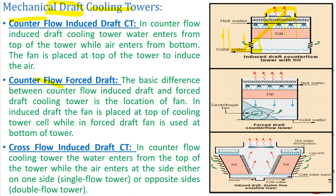The difference between induced draft and forced draft: in induced draft, the fan creates negative suction and takes air from inside, with air moving from bottom to top. In forced draft, the fan is relocated to the bottom of the cooling tower, forcing air inside. The air moves from bottom to top, while water still comes from top to bottom — a counter contact arrangement — but the fan is at the bottom, forcing the draft.